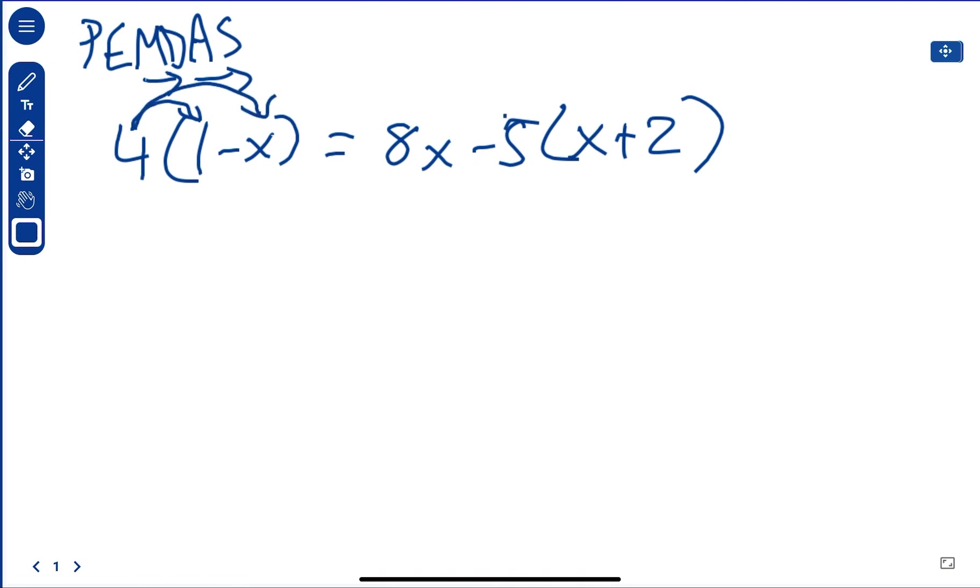And we know to do multiplication, we do distributive property. Multiply both of those. And we're going to do the same thing here. Okay. So what's 4 times 1? That is 4. 4 times negative X is negative 4X. And that's going to be equal to 8X. And then we've got negative 5 times X right here. So that's negative 5X. And then we have 5 times 2. Negative 5 times 2 is negative 10.